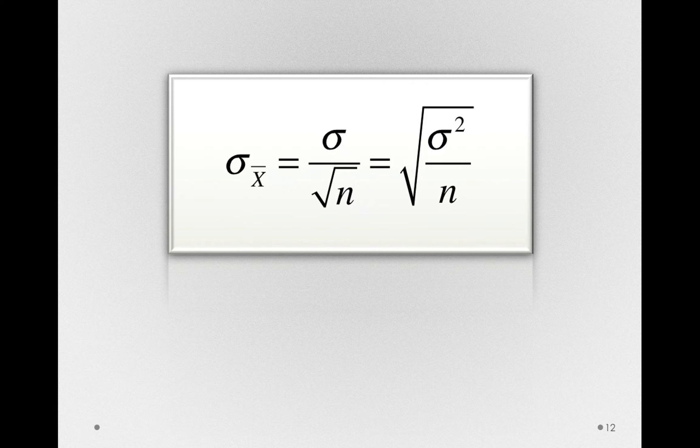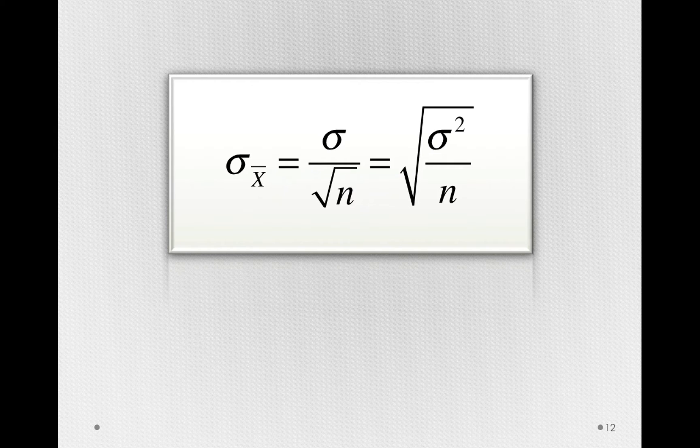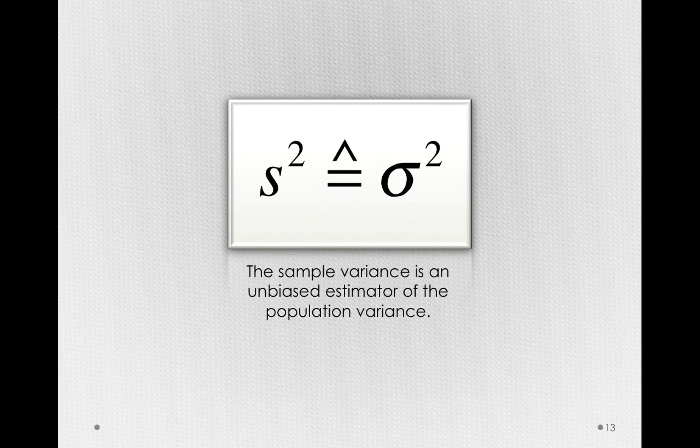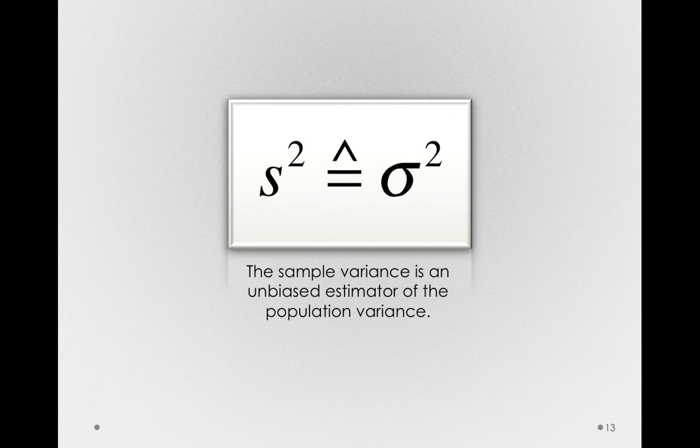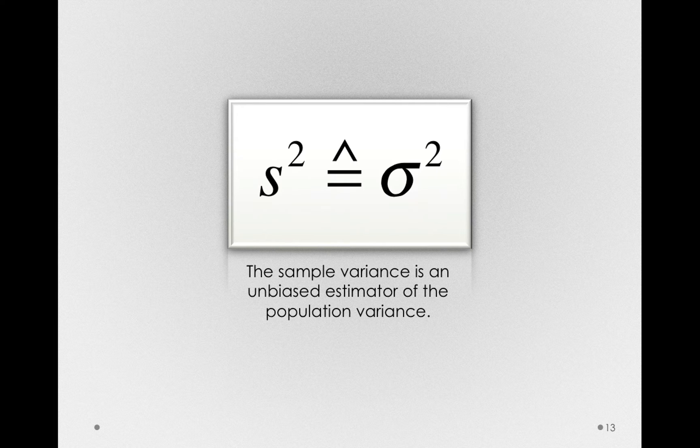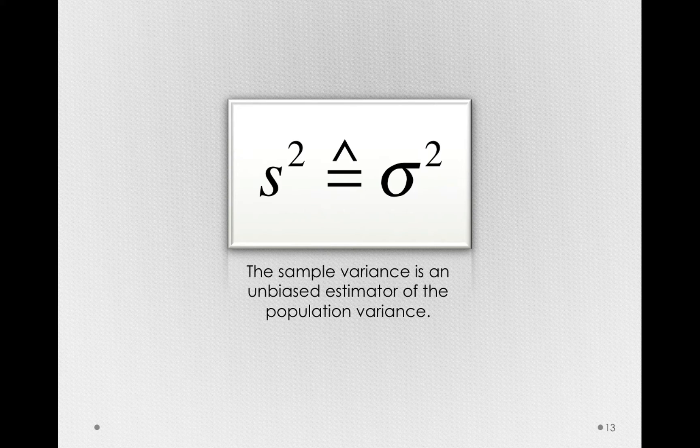So, what we're going to do in order to not have to know the population standard deviation or variance is we'll use our sample estimate. Remember, we have an unbiased estimator of the population variance, s-squared. This is the estimator that uses n-1 in the denominator. So notice that if we substitute s-squared for all the places that we used sigma-squared, we won't be calculating the true standard error.